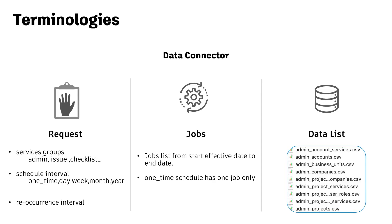There are three terminologies with Data Connector. A Request defines which service groups you want to extract, and schedules one time, or by day, by week, or by month. You can also set the interval of the occurrence — for example, one extraction per 10 days, or one extraction per four weeks. Each occurrence of the extraction is one Job, which runs in the period of the effective days in the timeline. Each job will provide the corresponding data list for downloading.